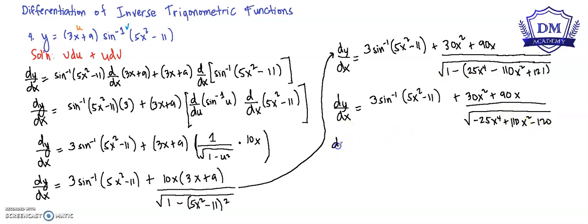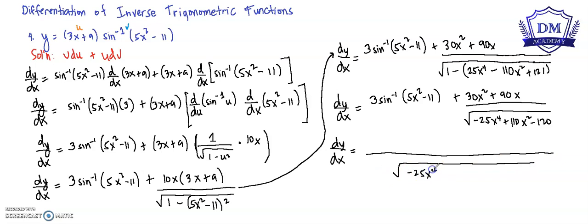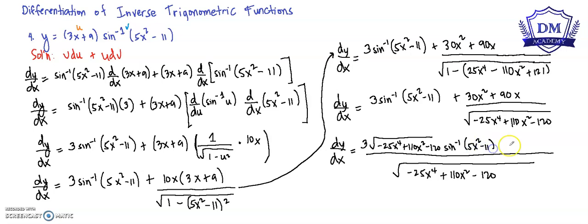So finally, our dy/dx, finding the LCD, is: the square root of (negative 25x⁴ + 110x² - 120) times 3·arcsin(5x² - 11) plus (30x² + 90x), all over the square root of (negative 25x⁴ + 110x² - 120). This is our dy/dx.